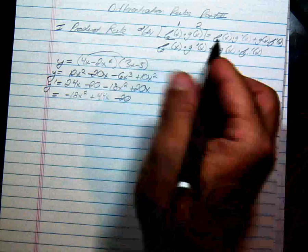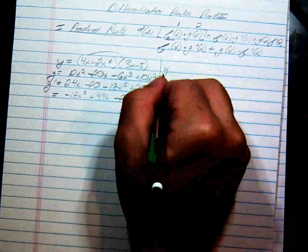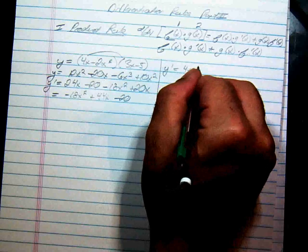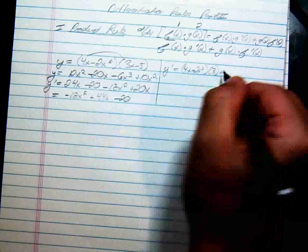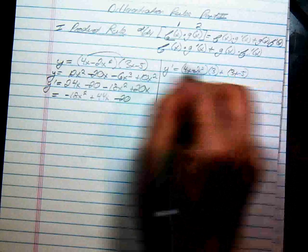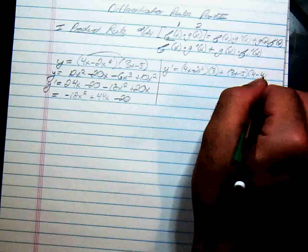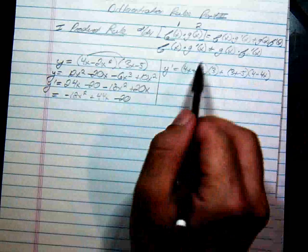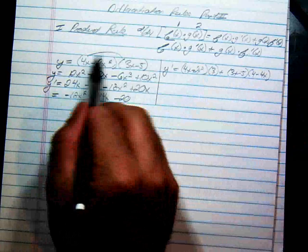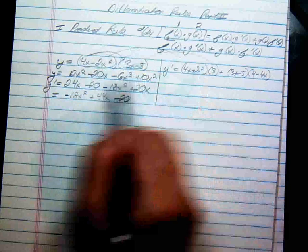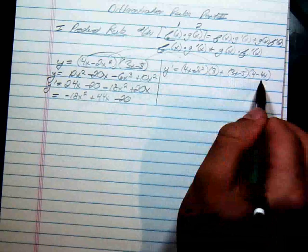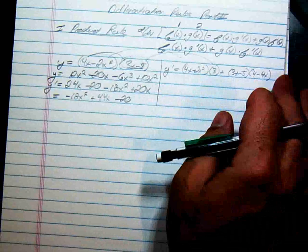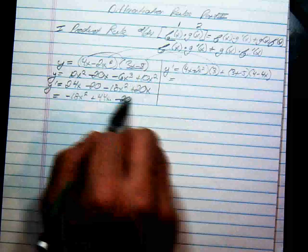Now let's use the product rule side by side. y prime is going to be the first, 4x minus 2x squared, times the derivative of the second, which is just 3 — that's 1d2 — plus the second, 3x minus 5, times the derivative of the first, which is 4 minus 4x. I took the first and multiplied by the derivative of the second, then took the second and multiplied by the derivative of the first.